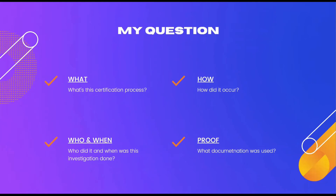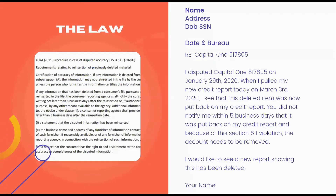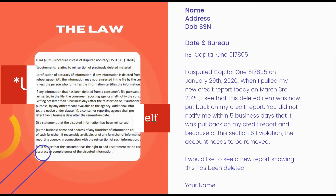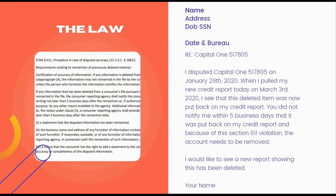The first way to dispute is to put the reinserted account on its own letter. It would say: I disputed Capital One account 517805 on January 29, 2020. When I pulled my new report today on March 3, 2020, I see that this deleted item was put back on my credit report. You did not notify me within five business days that it was put back on my report. Because of this Section 611 violation, this account needs to be removed.